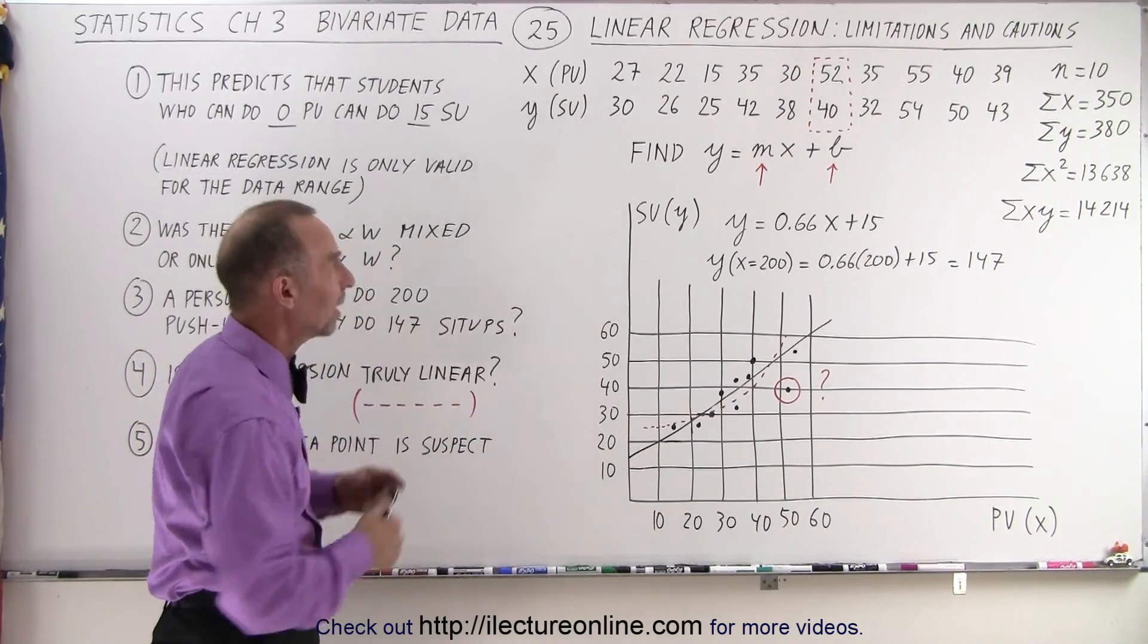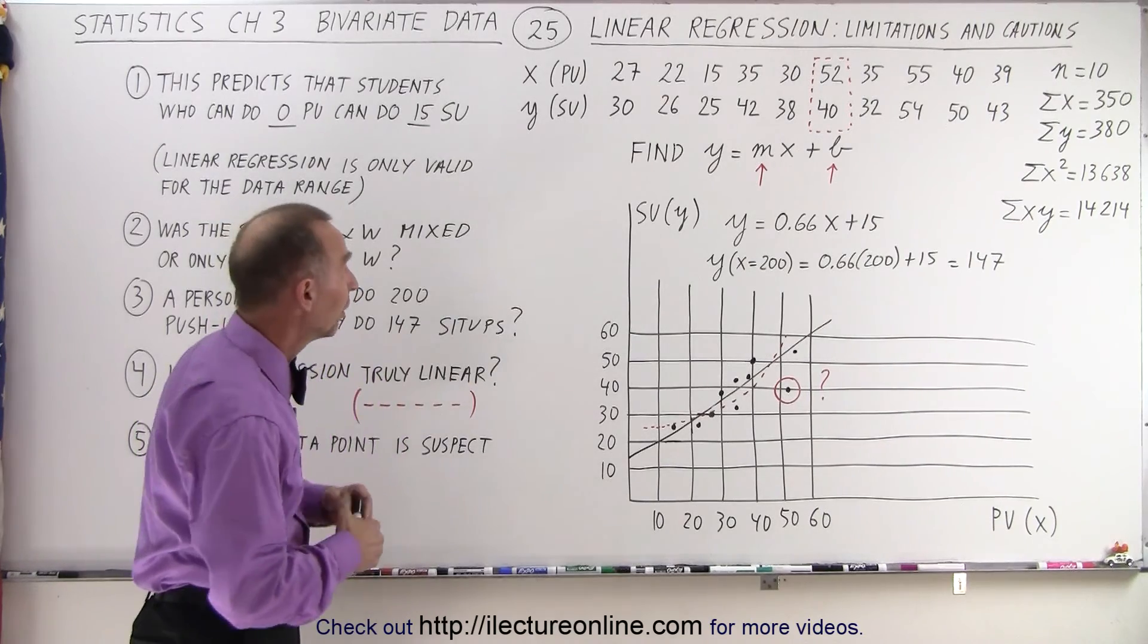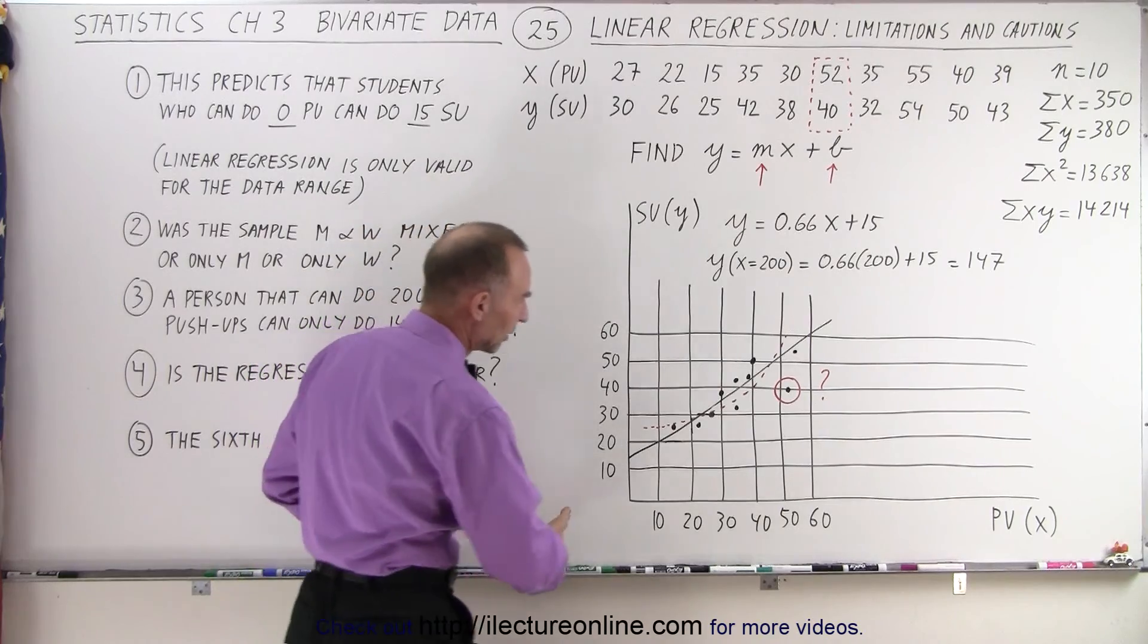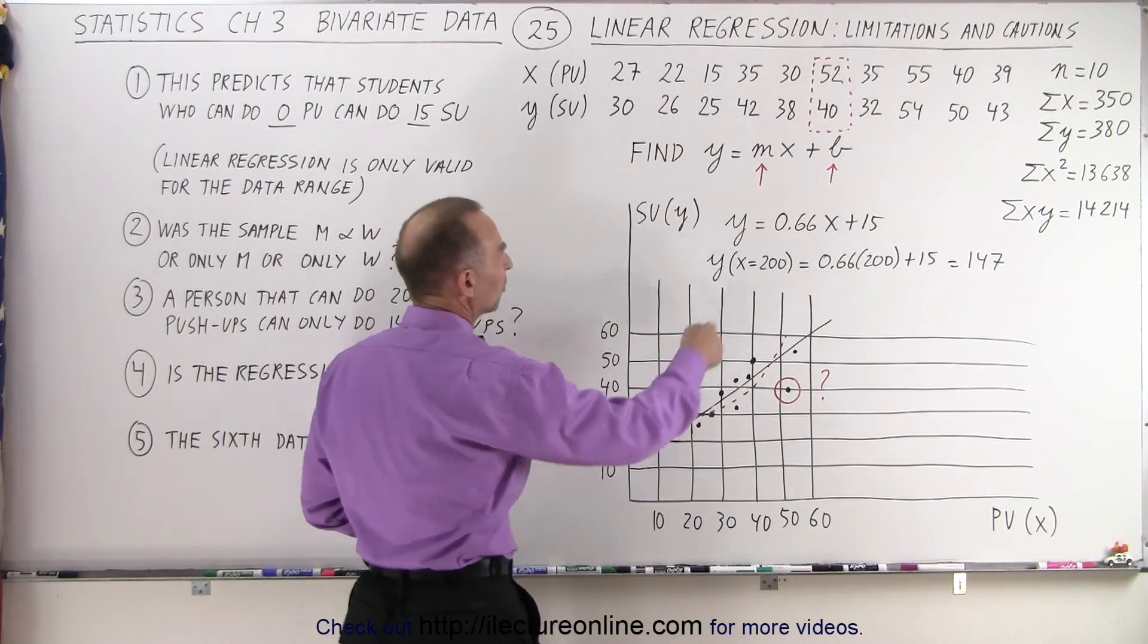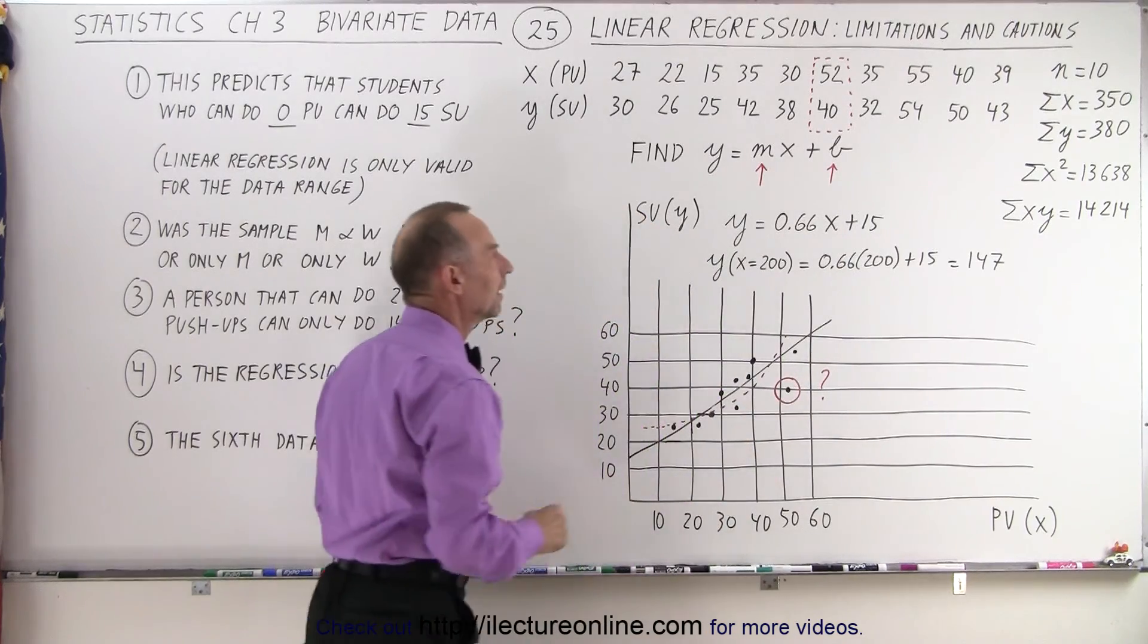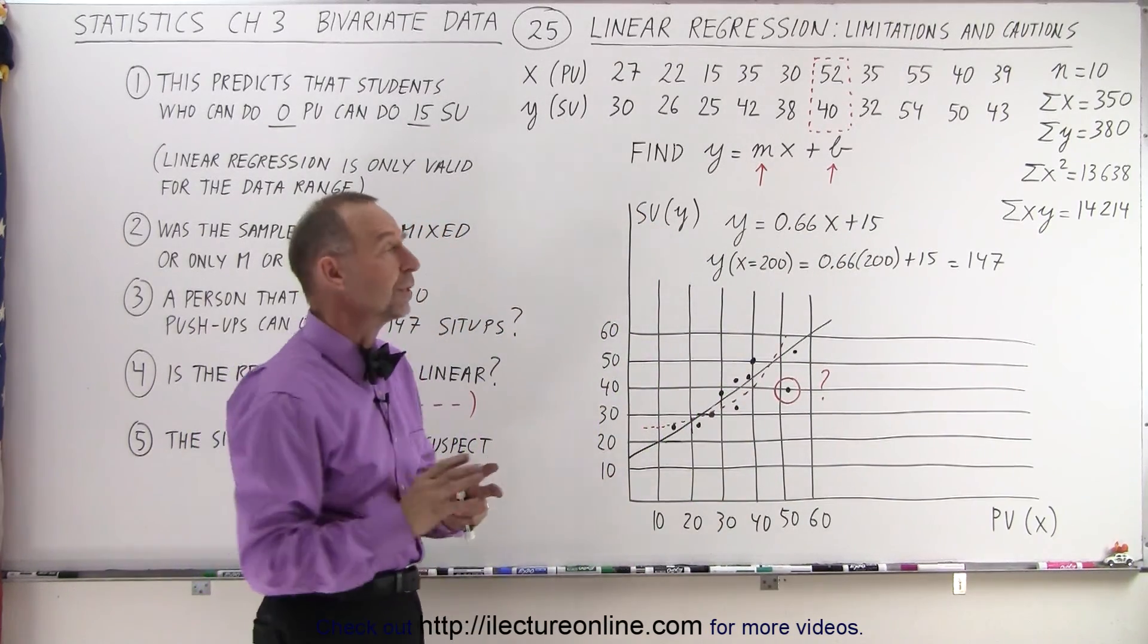And again, we'll take our data set that by now we're fairly familiar with, the number of push-ups related to the number of sit-ups. And you can see we found the best fit line. The equation of the best fit line was Y equals 0.66X plus 15. So, what do we do with this?